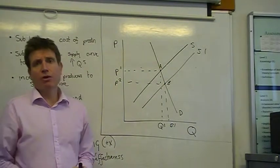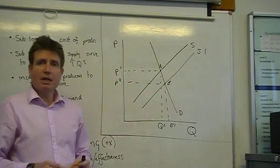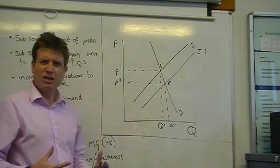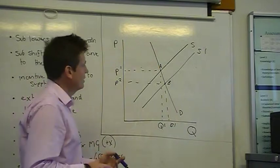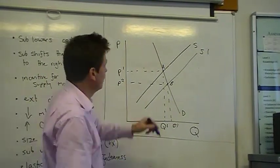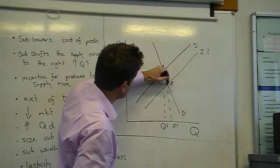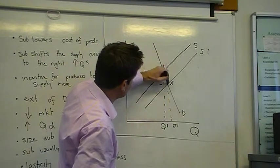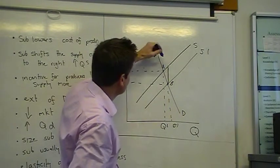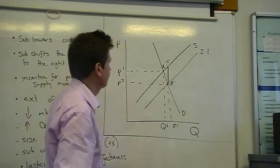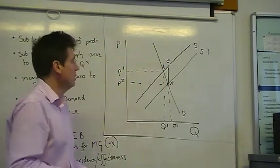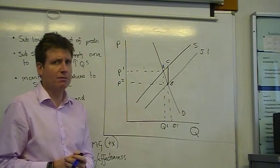What we can show now is the impact of the subsidy in terms of who actually gets it. The subsidy is just the vertical distance between the two supply curves — let's call it BC. So BC is the size of the subsidy. But who actually gets this subsidy?